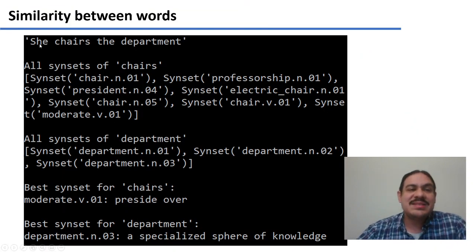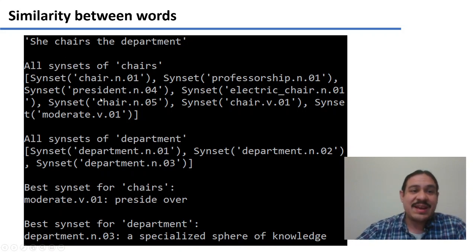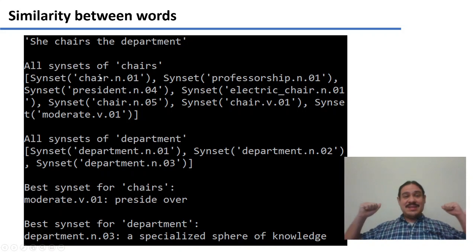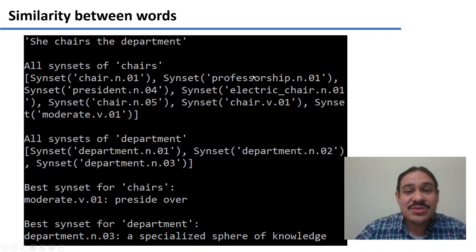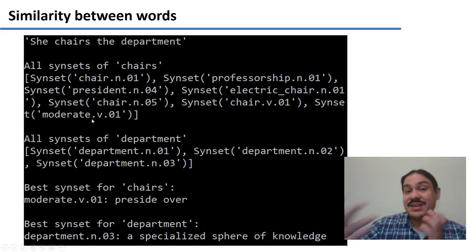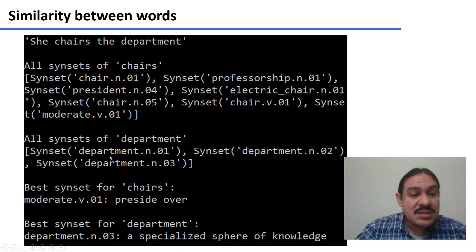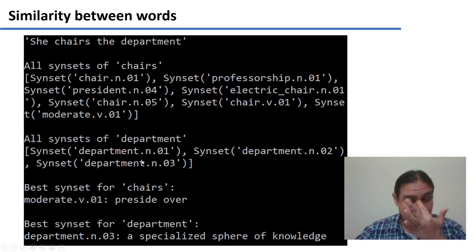WordNet can help us solve this. For example, if we have the sentence, she chairs the department. Chairs can have many different meanings. As you can see, it's the object that you sit on that has something to hold you back. It can mean a professorship. It can mean to moderate something, like to preside it. And department can also have different meanings, probably department store, but also somewhere that produces knowledge and so forth.